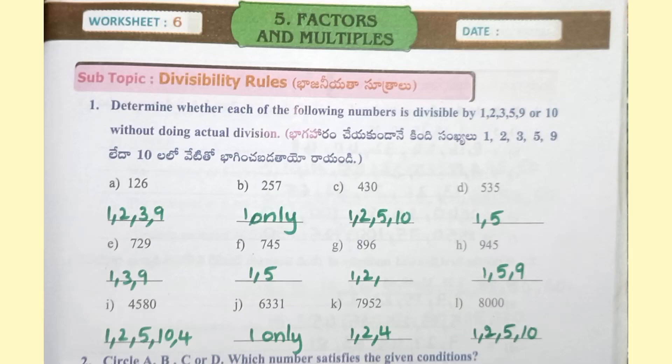Worksheet 6. Determine whether each of the following numbers is divisible by 1, 2, 3, 5, 9, or 10 without doing actual division. 126 is divisible by 1, 2, 3, 9, or 10. 257 is divisible by 1. 430 is divisible by 1, 2, 5, 10. 535 is divisible by 1, 5.